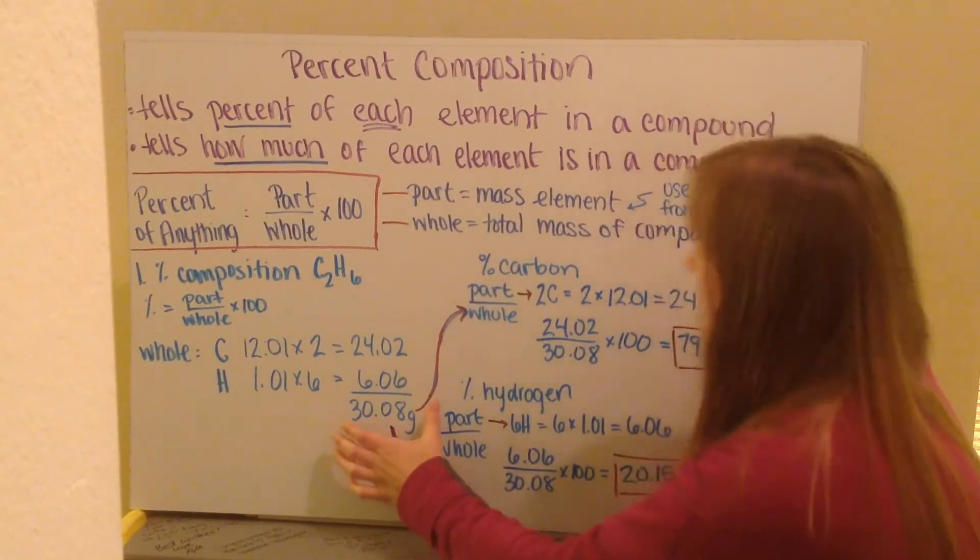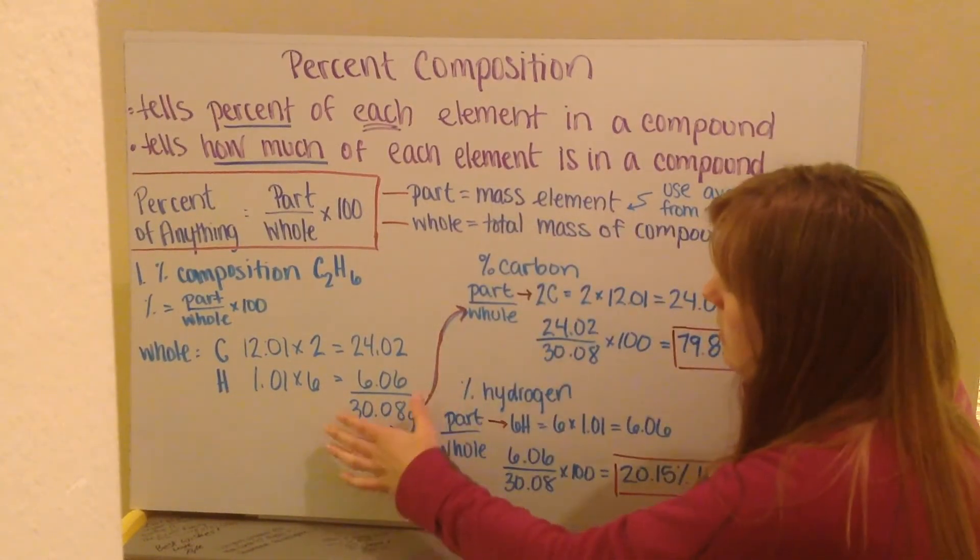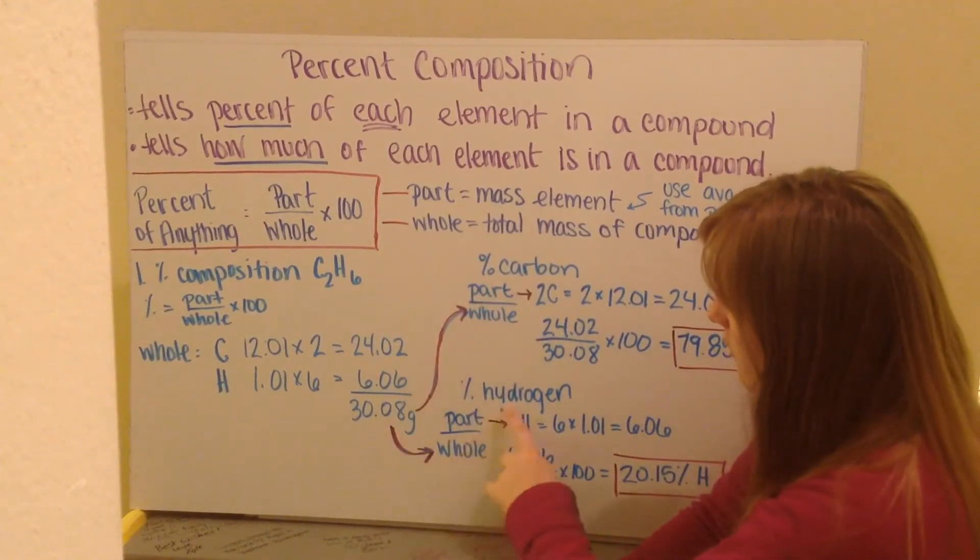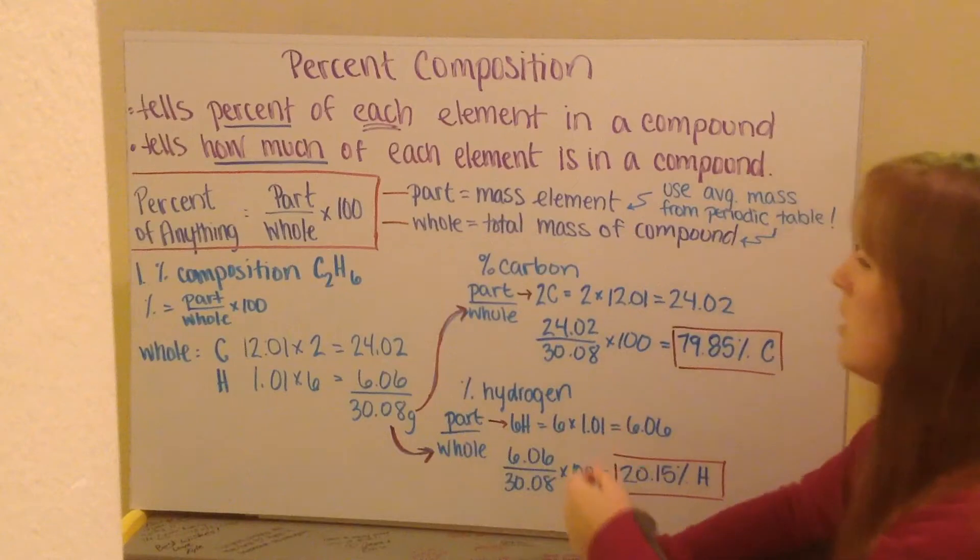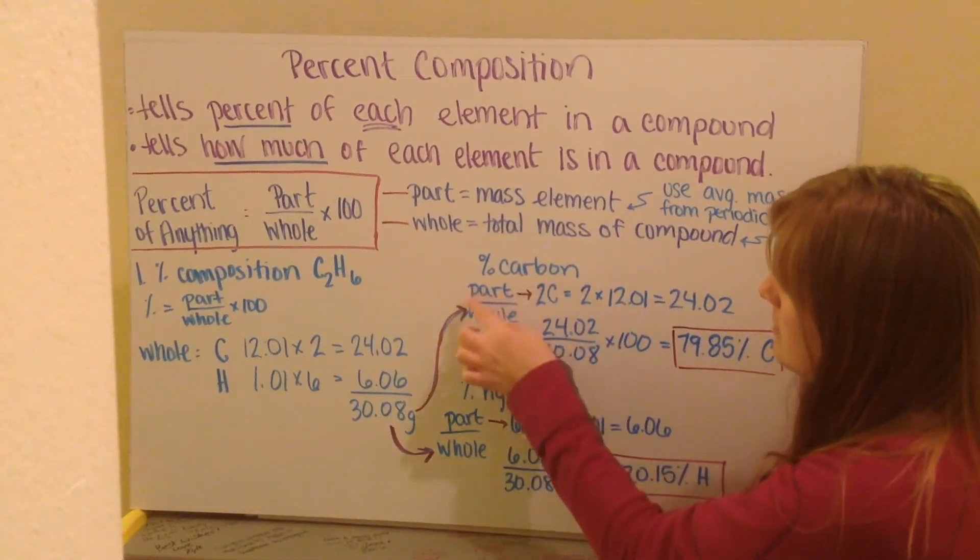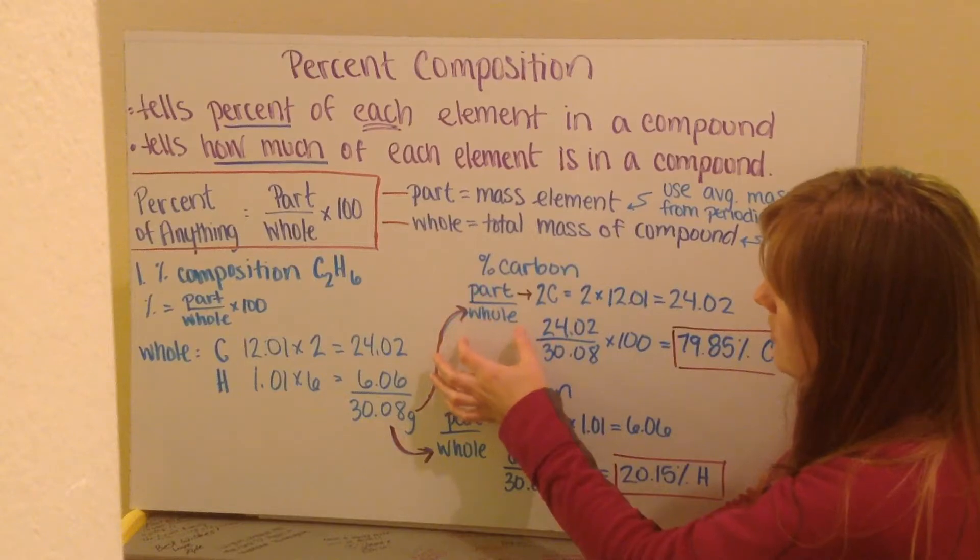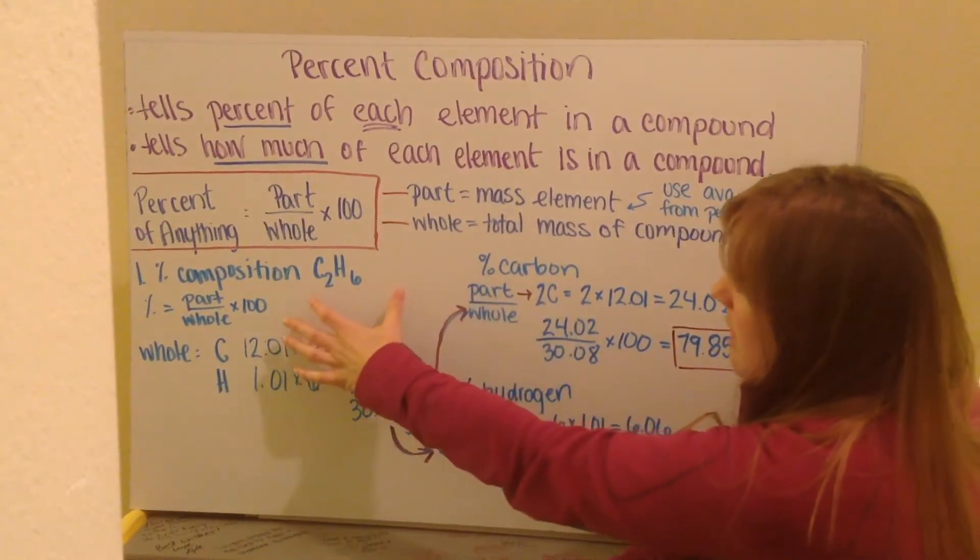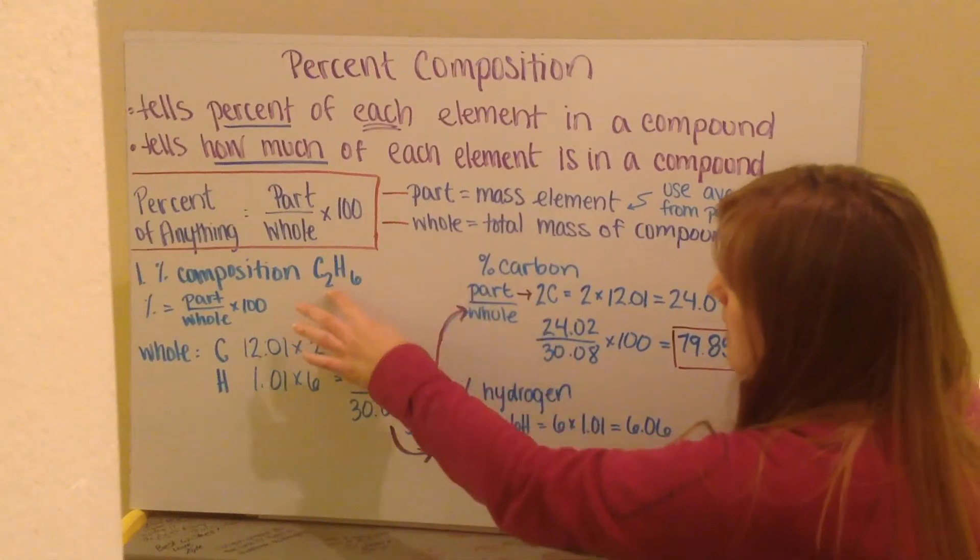This is my mass of my compound, which goes into my whole for both my percent carbon and my whole for percent hydrogen. Moving on to find percent carbon, my percent carbon is my part divided by whole times 100. My part in this case being the amount of carbon I have in this compound. I have two carbon atoms, C2.